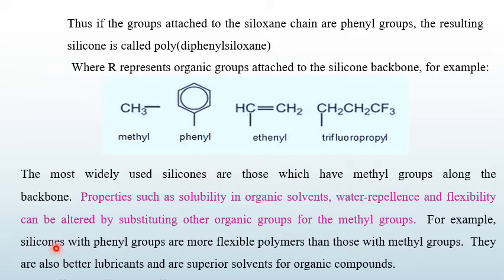For example, silicones with phenyl groups — if we replace methyl with phenyl groups — these compounds are more flexible polymers than those with methyl groups. They are also better lubricants and are superior solvents for organic compounds. These are the basics of structure and bonding in silicone compounds.